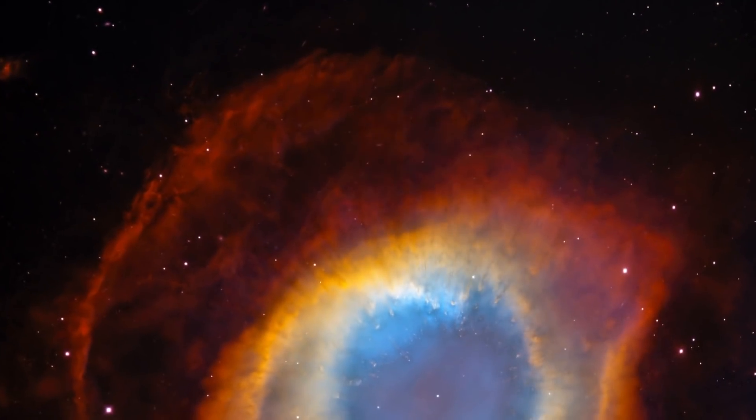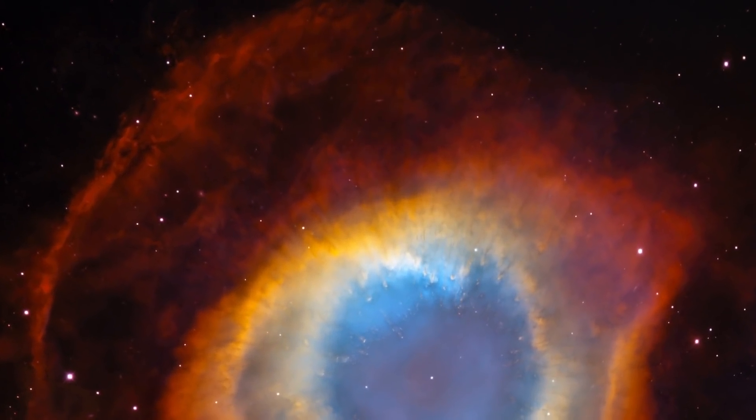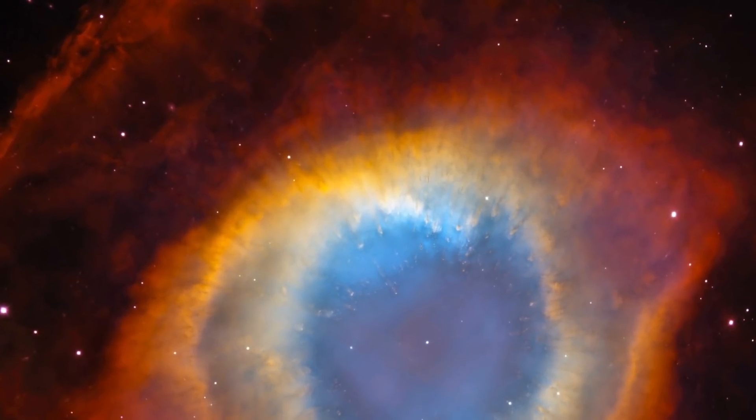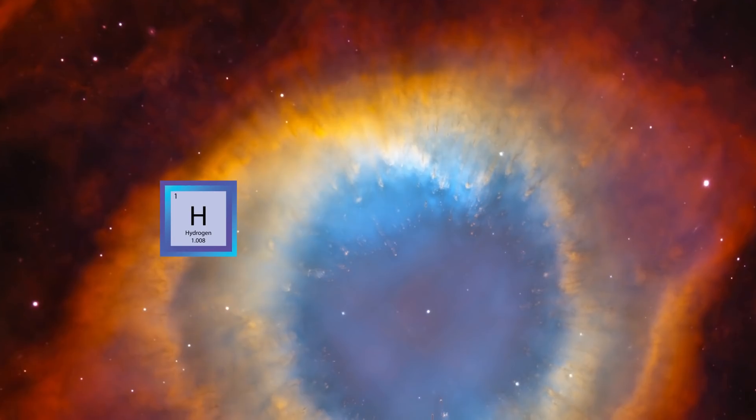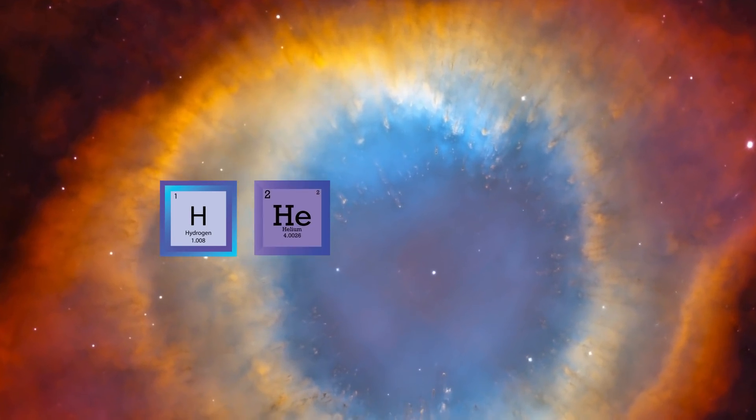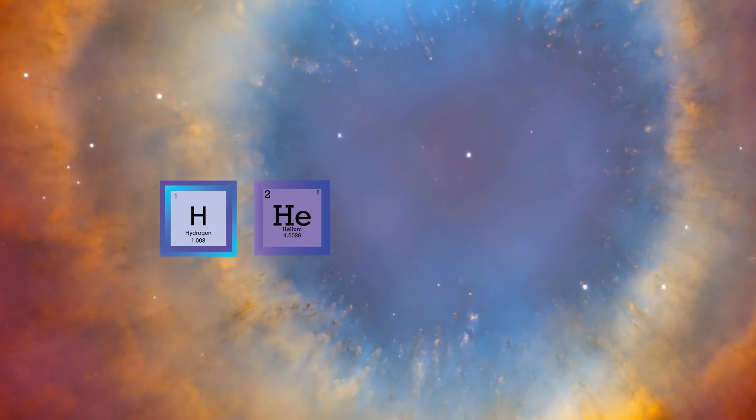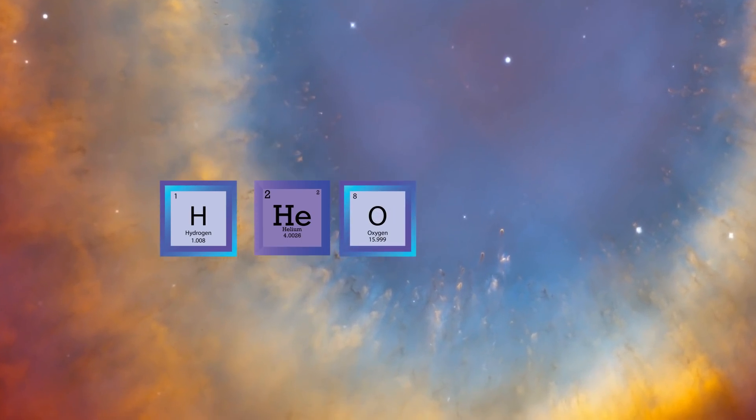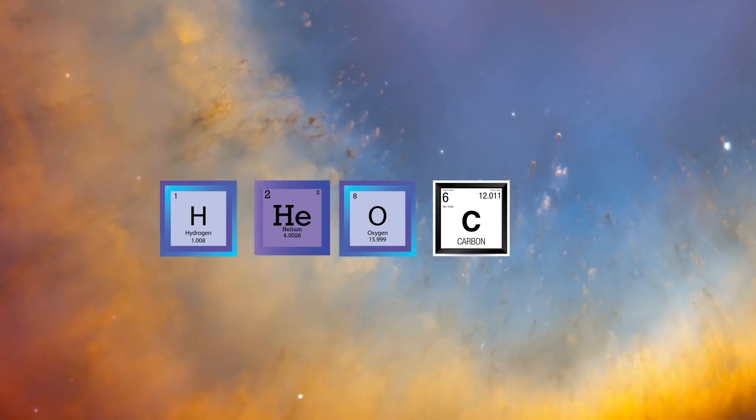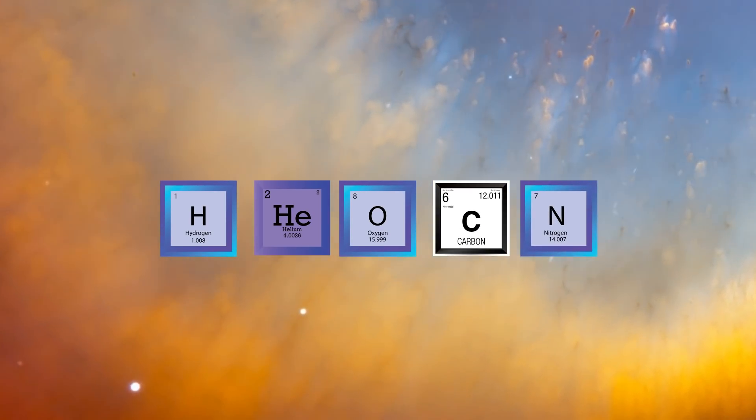If you rank order the abundance of chemical elements in the universe, the number one element is hydrogen. Number two is helium, which is not chemically active, but it's there. Number three is oxygen. Number four is carbon. Number five is nitrogen.